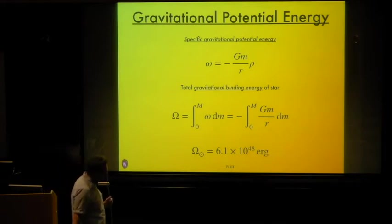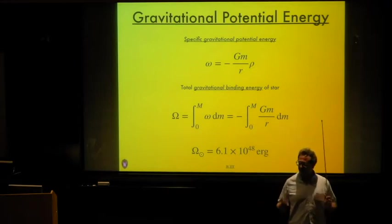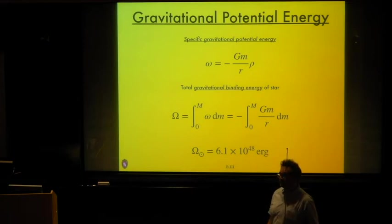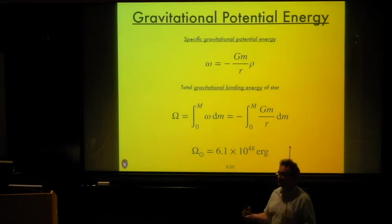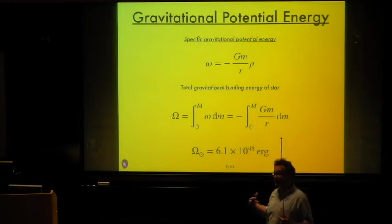How one defines the edge of the Sun really depends on what wavelength one is considering. Usually we define the surface of the Sun to be the position of the layers from which most of the Sun's light emerges — essentially the layer of last interaction, where radiation last interacted with matter.